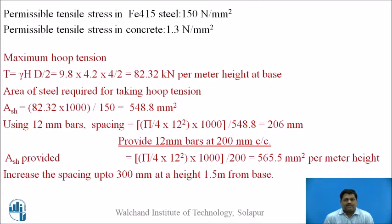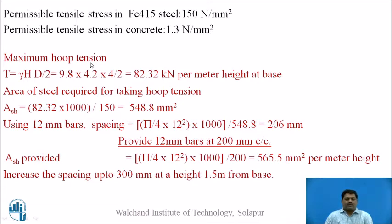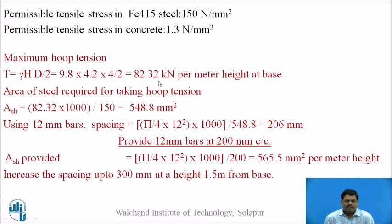Now let us start the design. The permissible tensile stress in Fe415 steel is 150 N/mm². The permissible tensile stress in concrete is 1.3 N/mm² for M20 grade of concrete. The maximum hoop tension is a circumferential tension due to the water load in case of a flexible base. Since the base is flexible, displacement is allowed and not completely restrained, so the action is hoop tension. Hoop tension T = γ × H × D / 2 = 9.8 × 4.2 × 4 / 2 = 82.32 kN per metre height at the base.